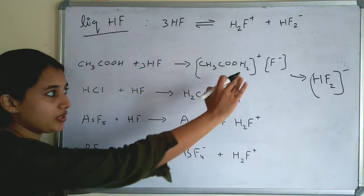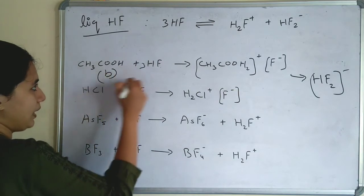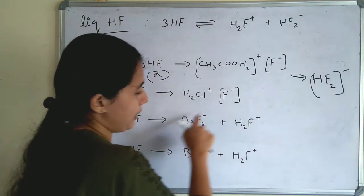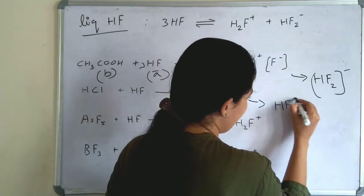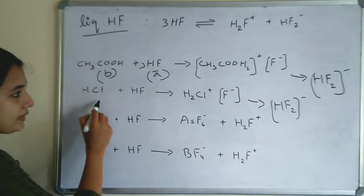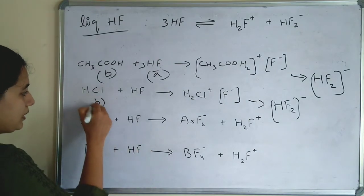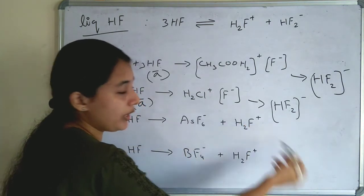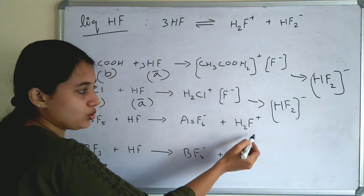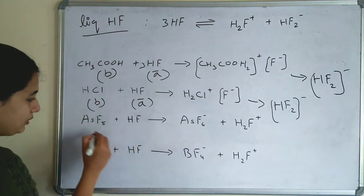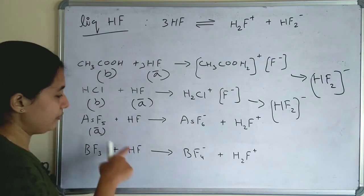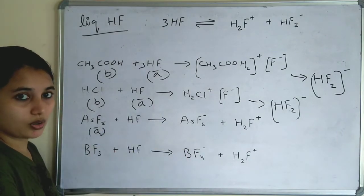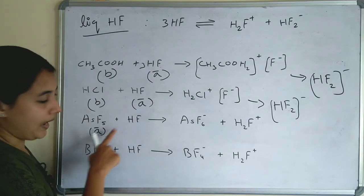CH3COOH is accepting a proton, so it is a base and HF is the acid. HCl + HF → H2Cl⁺ + F⁻, which also forms HF2⁻ — HCl is accepting a proton so it is a base and HF is the acid. AsF5 + HF → AsF6⁻ + H2F⁺. H2F⁺ is formed, and AsF5 is accepting fluorine, so AsF5 is the acid. Fluorine acceptor is the acid.